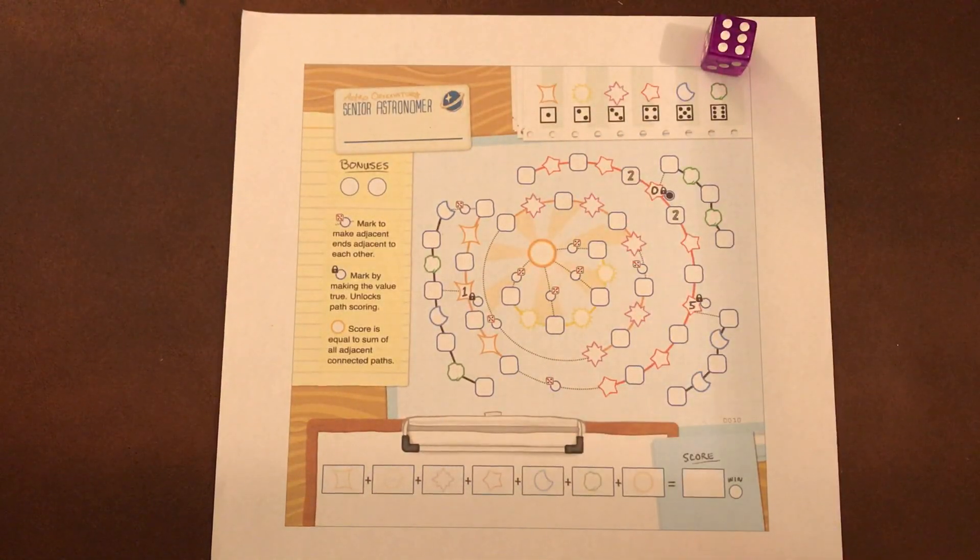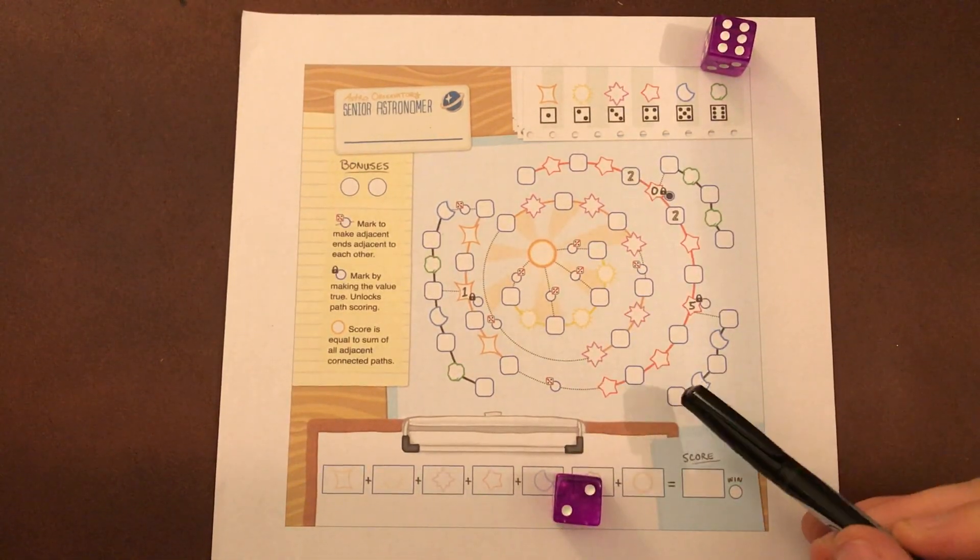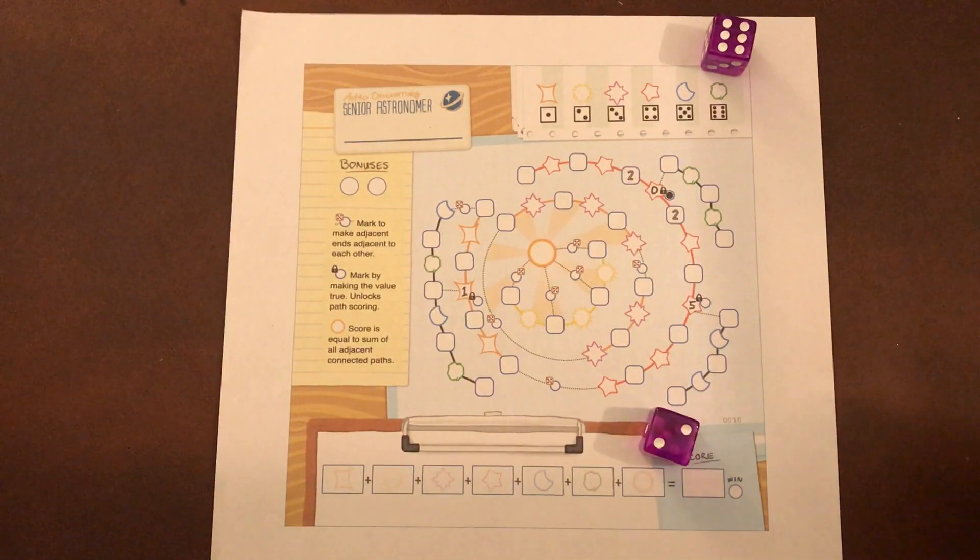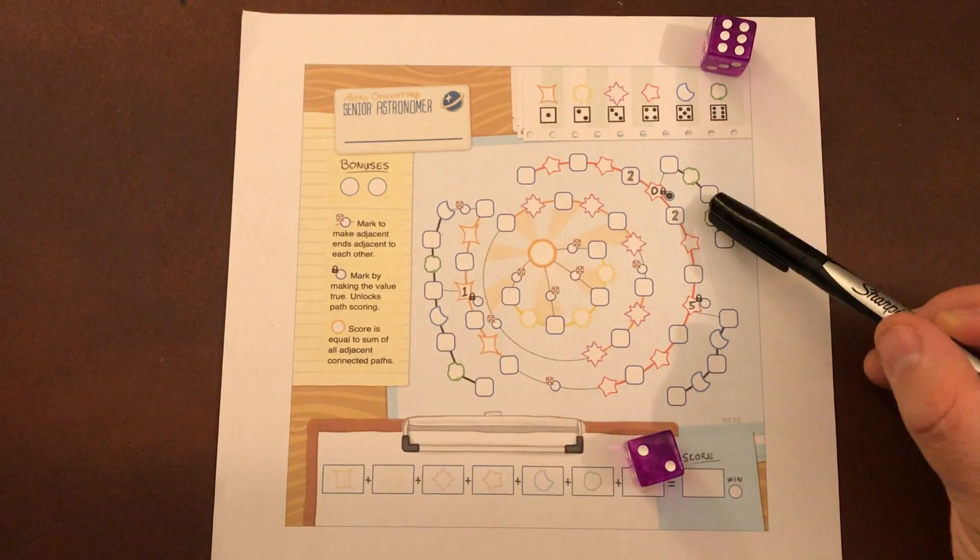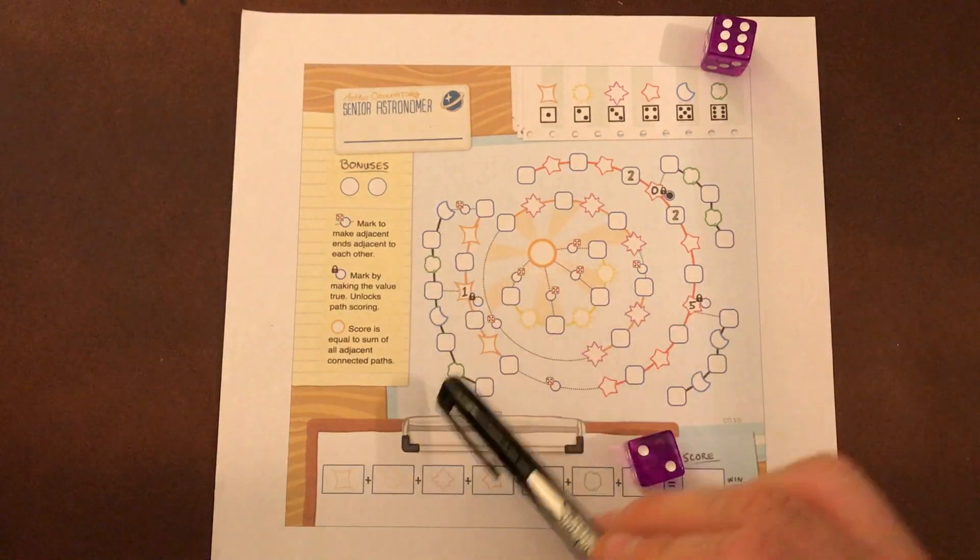Whichever one you choose is going to be how you're going to use it. The other die is what you're going to fill in a square. So I can go a two and a six that's touching the little asteroid. There's some over there and some over here.